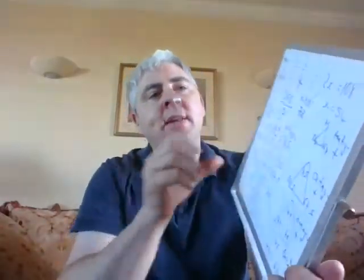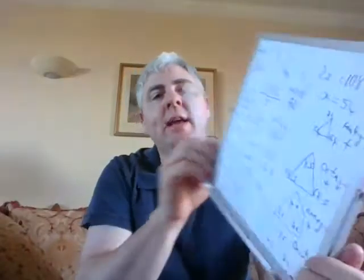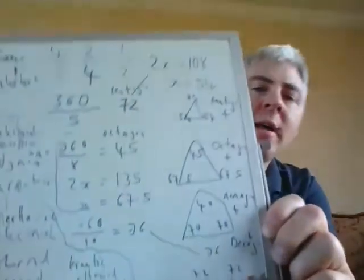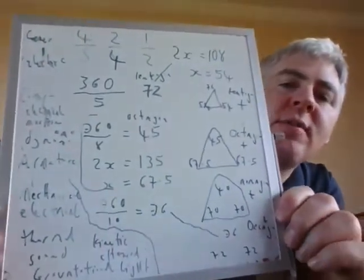Now I'm doing a pentagon. 360 divided by 5 equals 72. I've got 2x equals 108, so x equals 54. In triangle form, 72 is at the top and two 54s are at the bottom.